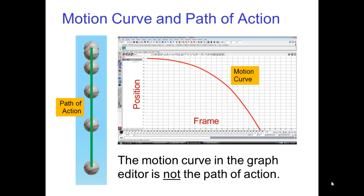It's important to understand that the motion curve in the graph editor is not the path of action. For example, a ball that is falling straight downward has a path of action that is a straight line, but the motion curve in the graph editor is not a straight line. In fact, the motion curve in this case happens to be a parabolic arc.